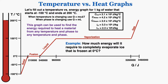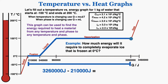These graphs can be used to find the energy required to heat a material from any temperature and phase to any other. For example, to find how much energy is needed to completely evaporate ice frozen at 0 degrees Celsius: since the ice starts as a solid at 0°C, the graph starts right before fusion begins, and ends when vaporization is complete. The total energy added is the final energy minus the starting energy, which equals 3,050,000 joules for 1 kilogram.